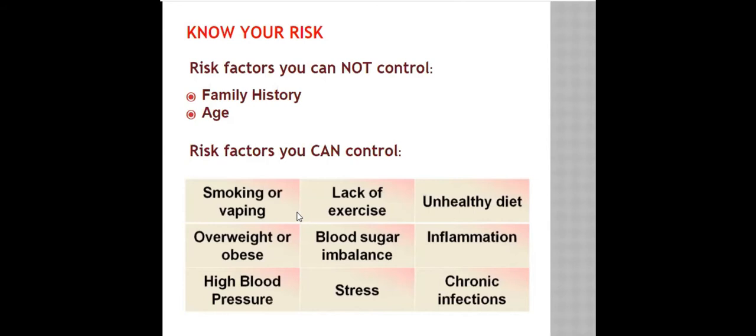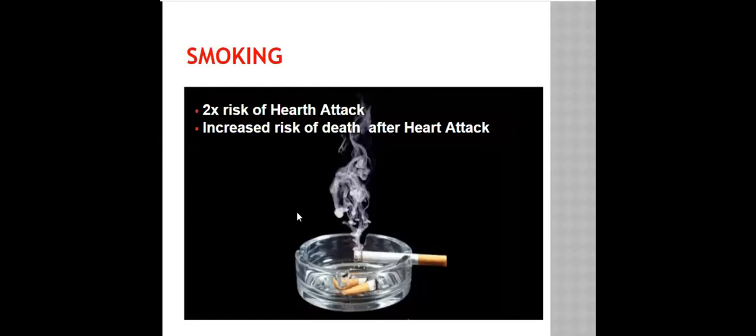You can't control family history. We come from where we come from. Can't control your age. You were born when you were born. But the rest of it, and this is 70, 80, 90% of the risk comes from those things that you do have control over.